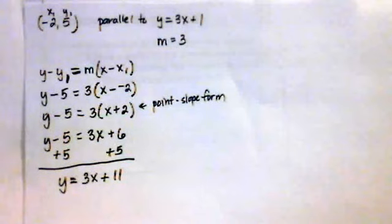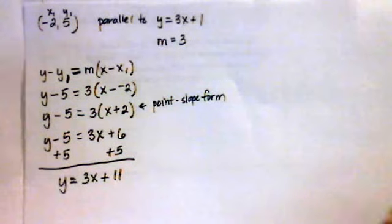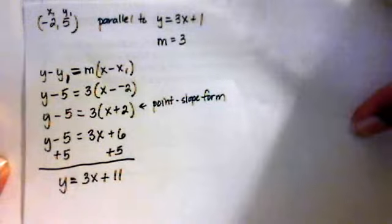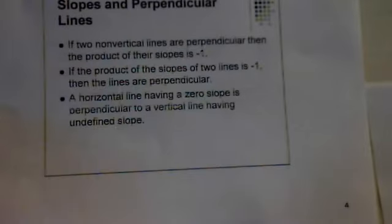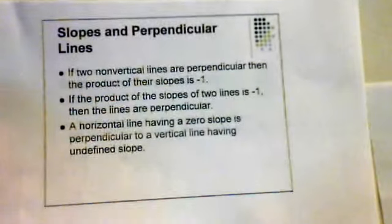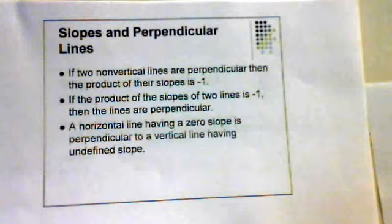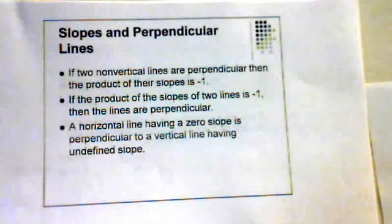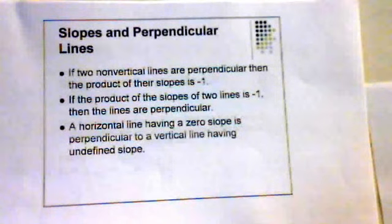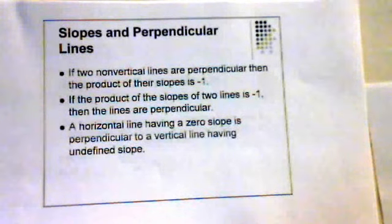So that's how you write the equation of a line that's passing through a given point and parallel to a given line. The next thing we'll look at is the relationship of slopes with perpendicular lines.